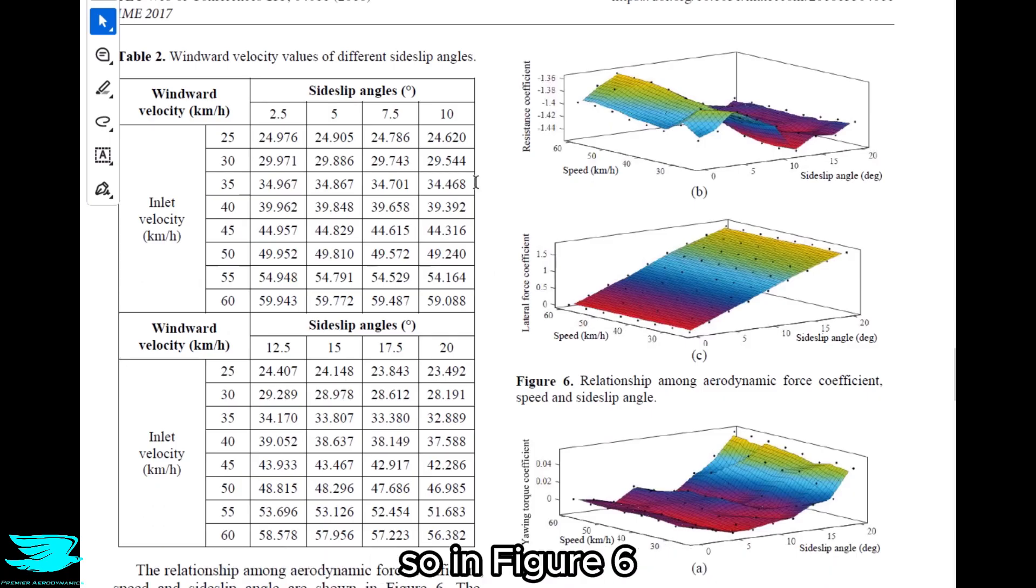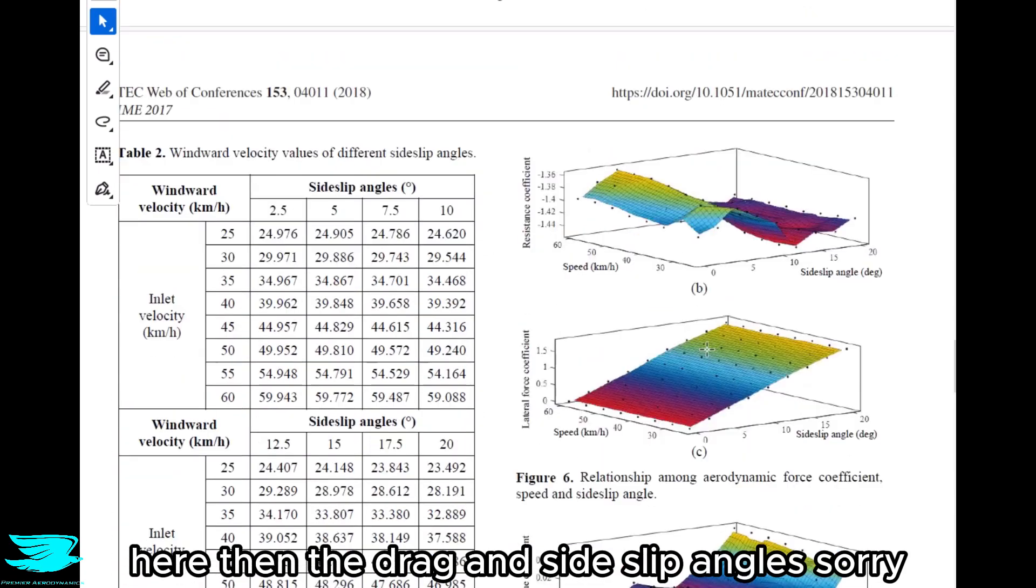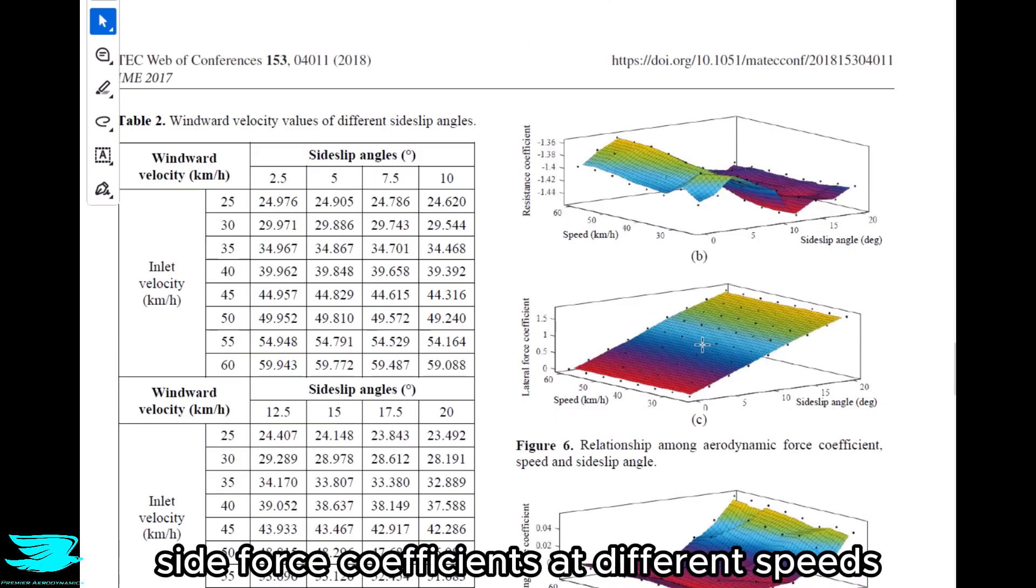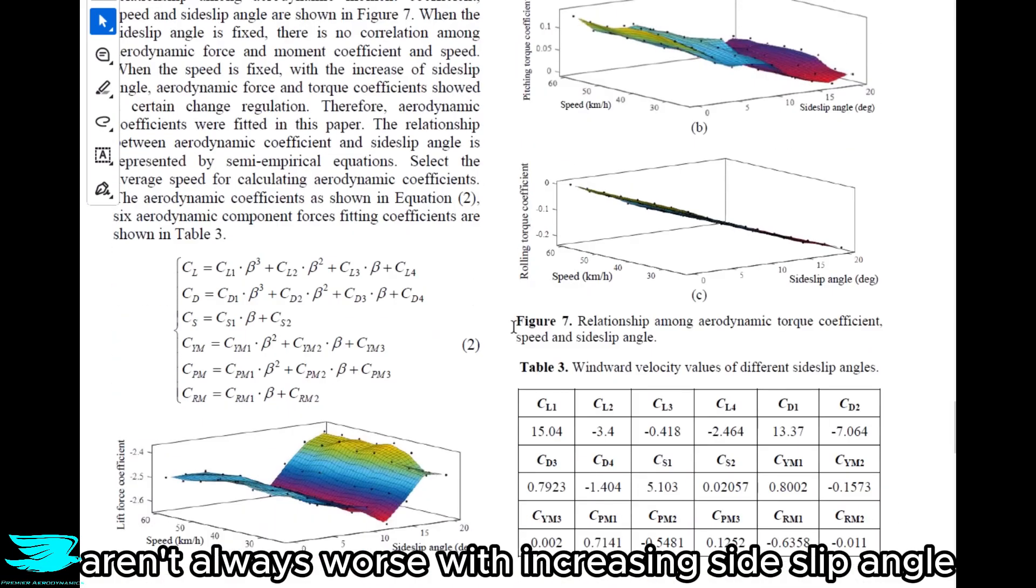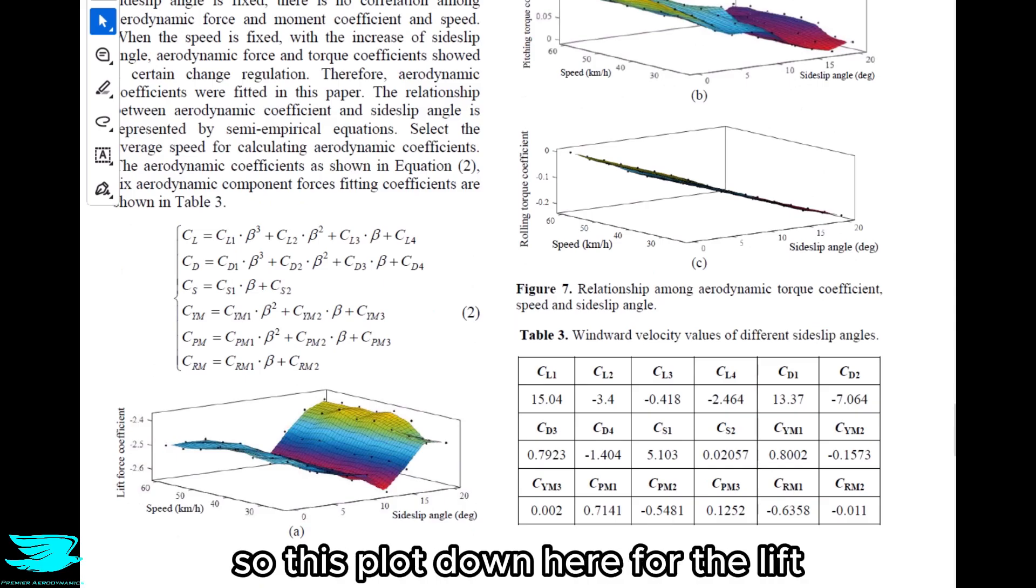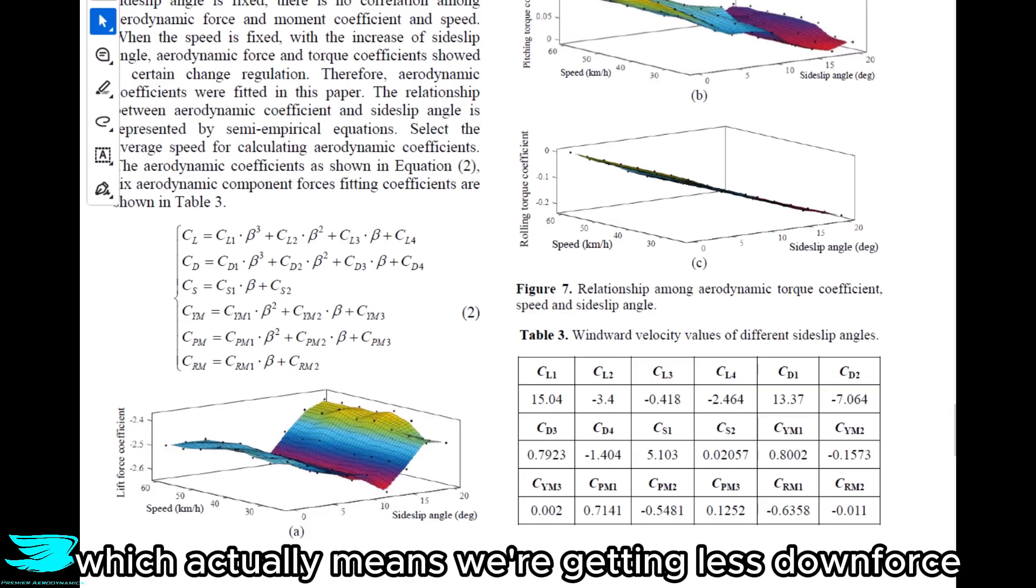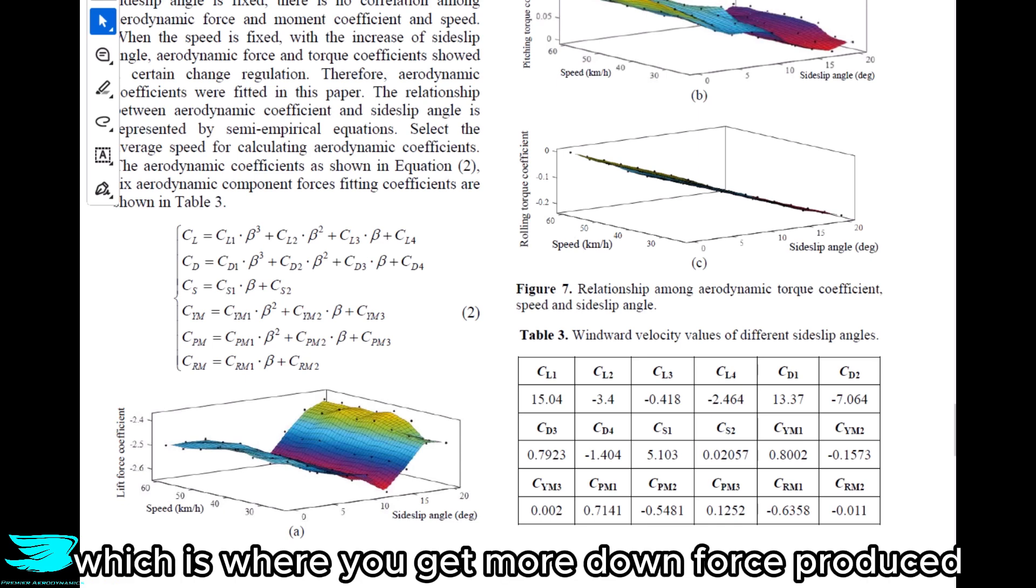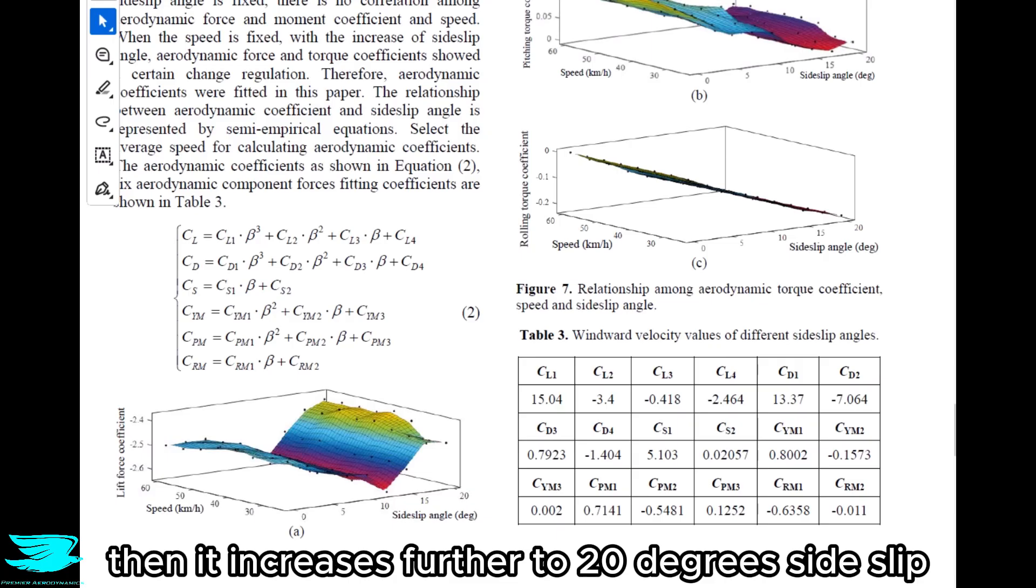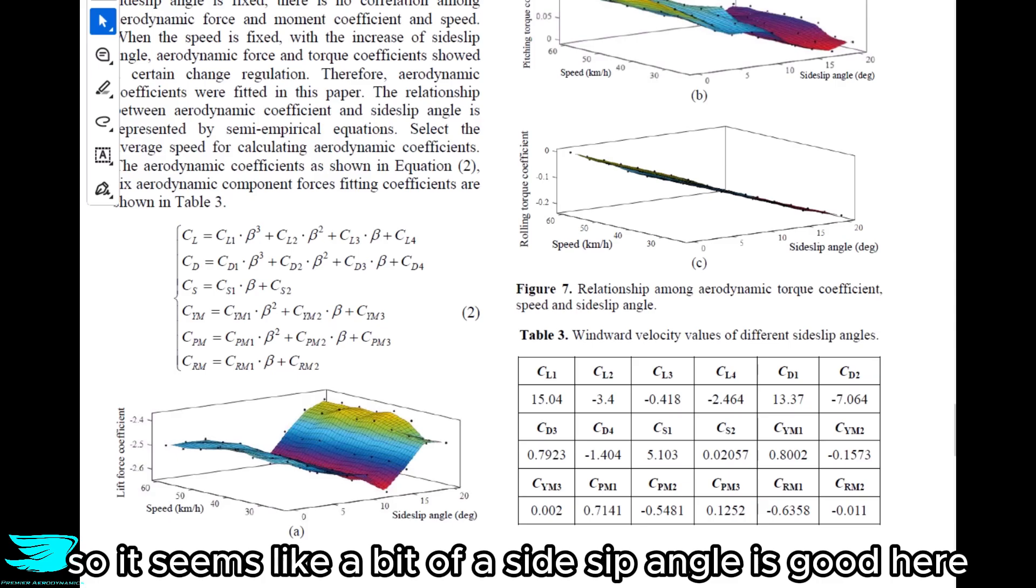Let's now move on to the findings. In figure 6, we see the effect of the side-slip angle on the lift here, then the drag and side coefficients at different speeds. The thing that stands out to me is that the lift and drag aren't always worse with increasing side-slip angle. For example, in figure 6A, this plot down here for the lift, we get a local maximum in the lift at zero degrees, which actually means we're getting less downforce at zero degrees than if you were to go to like 10 degrees side-slip angle, which is where you get more downforce produced. Then it increases further to 20 degrees side-slip, and that results in a global maximum for the lift coefficient. So it seems like a bit of a side-slip angle is good here, which I'm very surprised at.